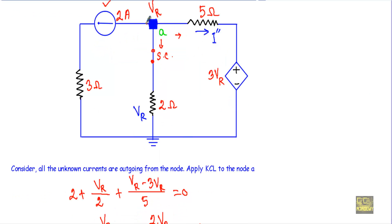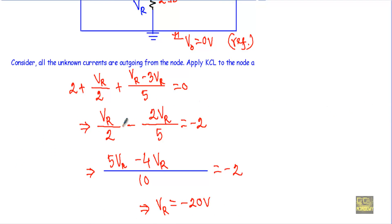Applying KCL at node A: the summation of outgoing currents equals incoming current, but there is no incoming current so the right side is 0. Outgoing currents are: 2 ampere from the current source, Vr divided by 2 through the 2 ohm resistor, and I double prime equal to (Vr minus 3Vr) divided by 5 through the 5 ohm branch. This gives Vr/2 plus (minus 2Vr)/5 plus 2 = 0, or (5Vr minus 4Vr)/10 = minus 2, giving Vr equal to minus 20 V.